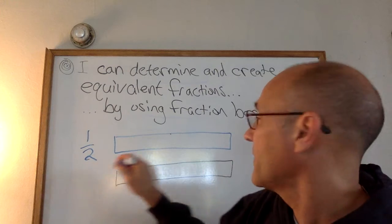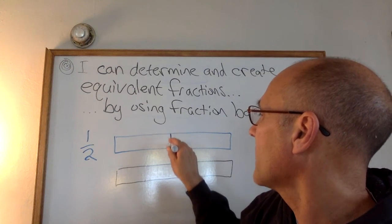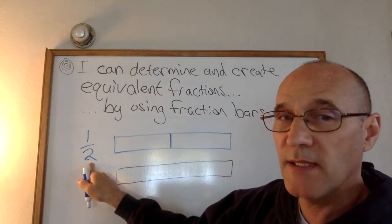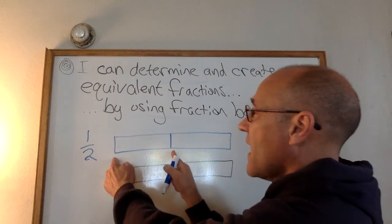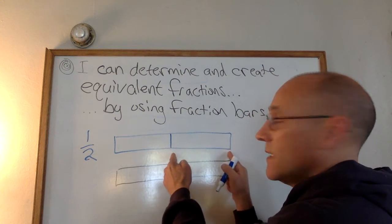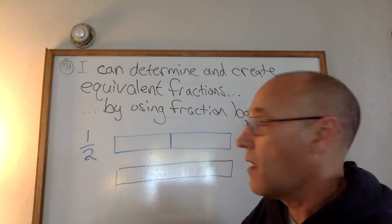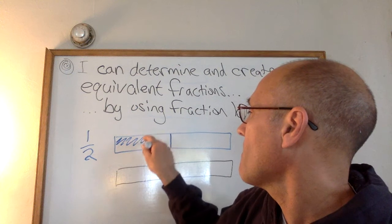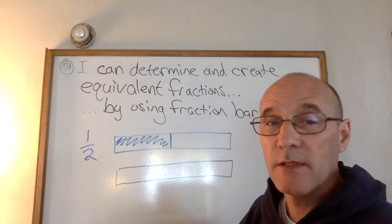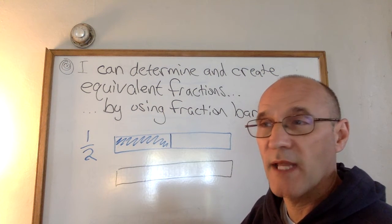The bottom number, the denominator, says how many pieces it takes to make a whole. What size pieces? The pieces are halves. It takes this size piece, it takes two of them to make a whole. One half would be one of them. So that would be a fraction bar representing one half.